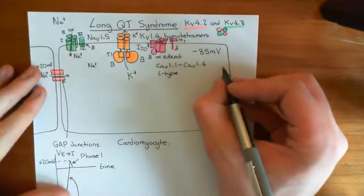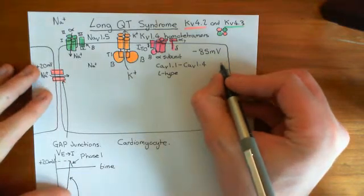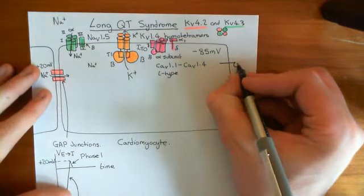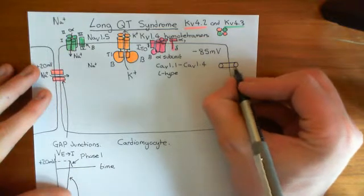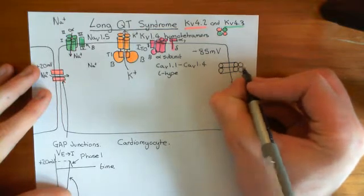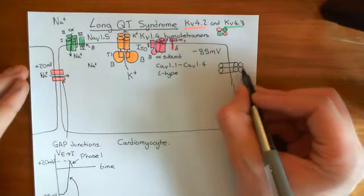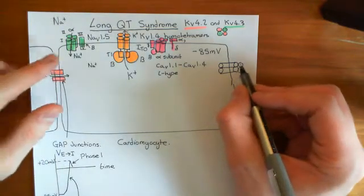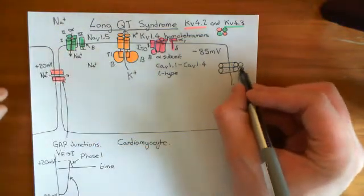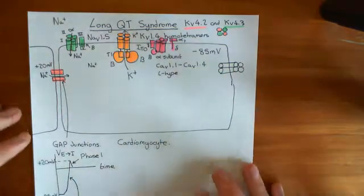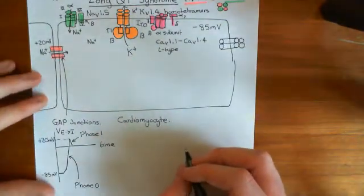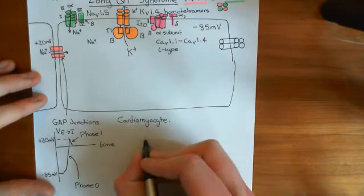This channel is called the KCNQ1 channel, and it's one that's often mutated in Long QT syndrome, so it's quite an important channel. Basically, it consists of four subunits which are tetramerized together. These four subunits are not one polypeptide as in the case of the voltage-gated sodium and voltage-gated calcium channel; in fact, each of these subunits is composed of two proteins.